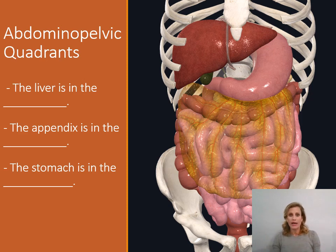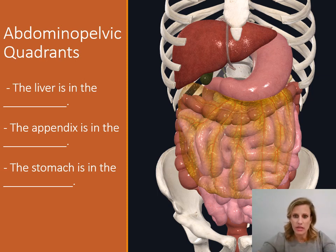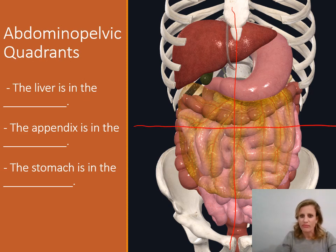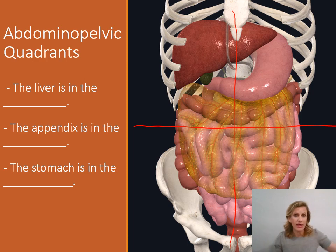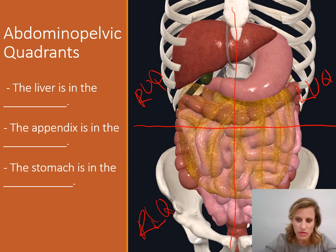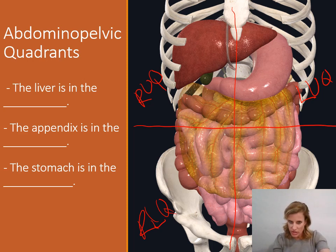Here I'm showing you the organs that are present in the abdominal pelvic area. If you draw a line down the center, and then the horizontal line goes right about where the belly button is, that gives us our four abdominal pelvic quadrants — right, left, upper and lower. So this is the right upper quadrant, the right lower quadrant, the left upper quadrant, and the left lower quadrant. This big brown organ right here is the liver.